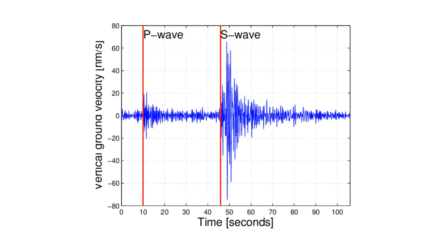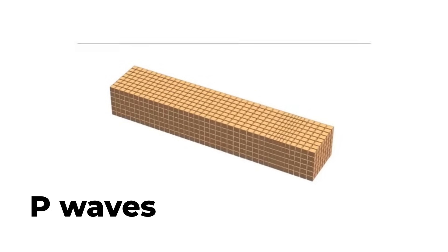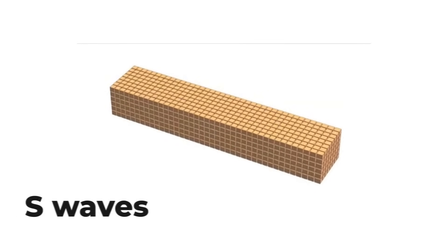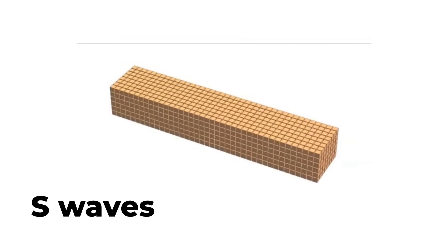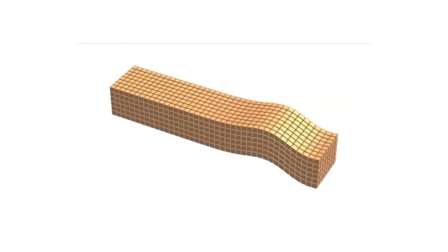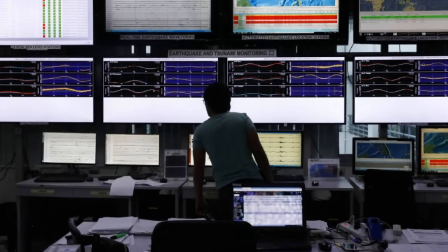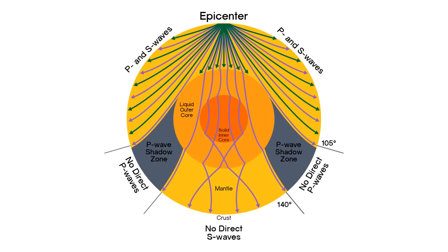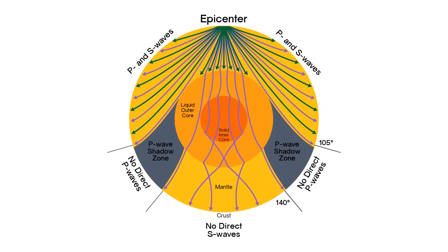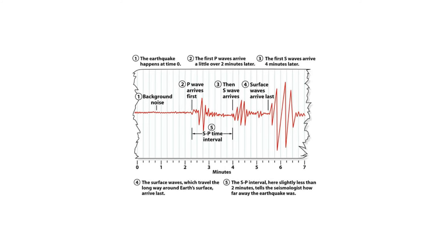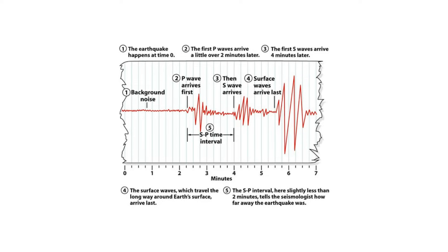Seismograms record two different types of waves: P-waves and S-waves. P-waves are compression waves where the Earth's surface stretches and squashes. S-waves are actual waveforms that displace and move the Earth's surface up and down. Scientists use these P and S waves to find the exact location of earthquakes. P-waves travel faster than S-waves — it is like lightning and thunder, with P-waves leading and S-waves following.